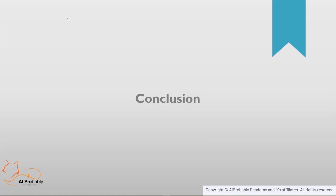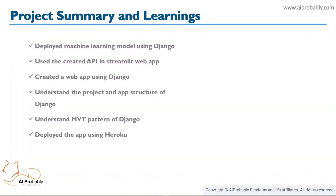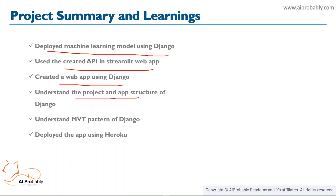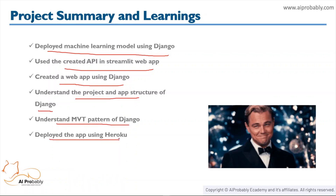Now we have reached the end of the course. In this course we saw how to deploy machine learning models using Django. We created an API for that and used the created API in our web application — and remember, you can use it in any other application like Android, iOS, or anywhere else. Then we created a web app using Django, understood the project and app structure, the MVT pattern, and deployed the app using Heroku.